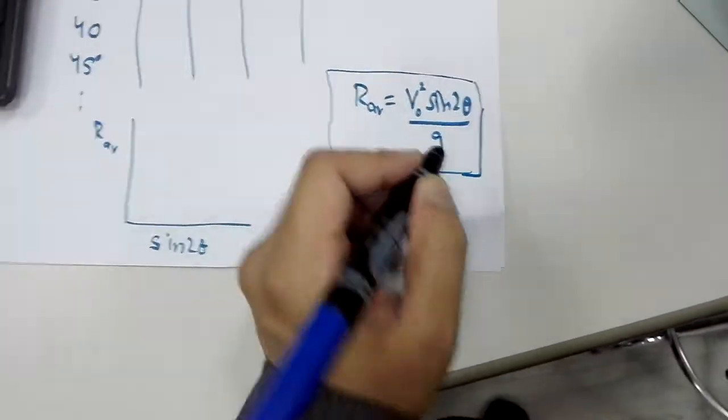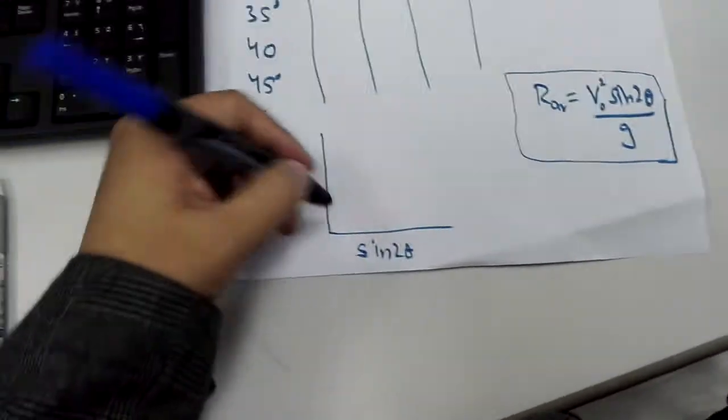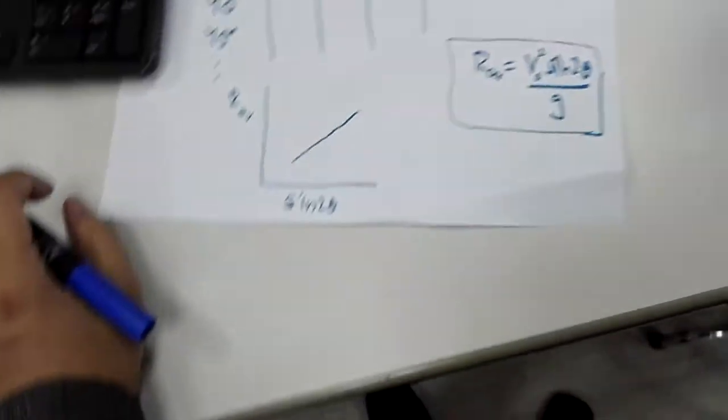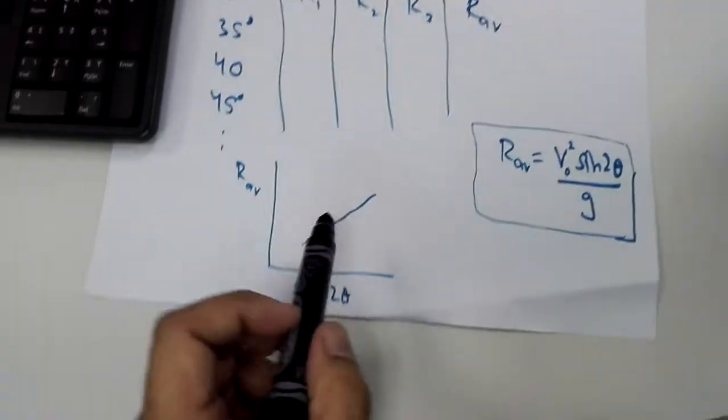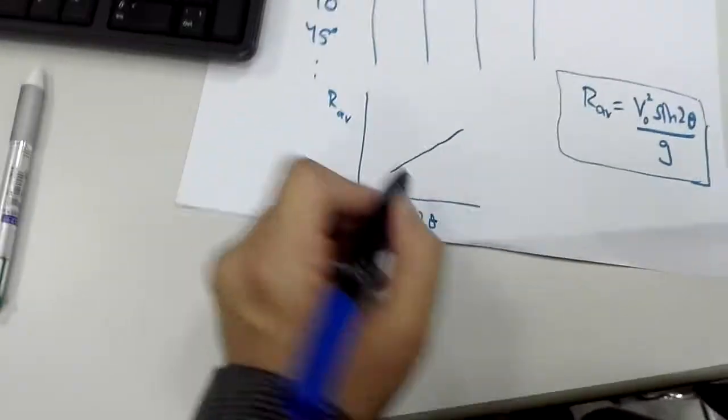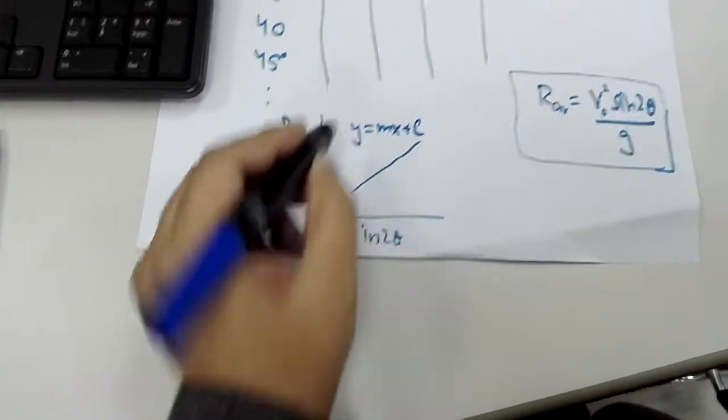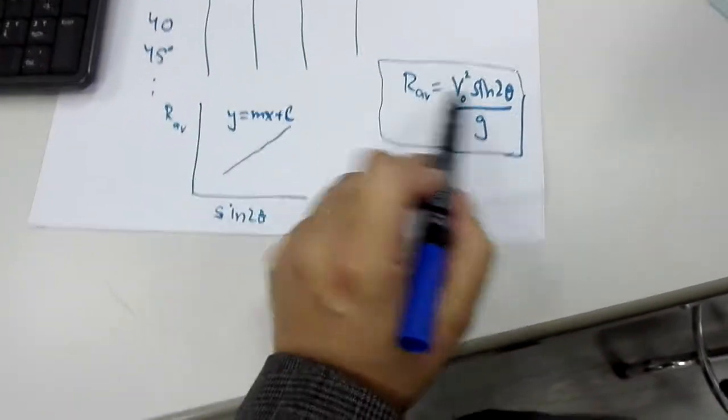So we get a line, and we can do a linear fit to the data in this case because the equation predicts a linear relationship. Excel will give you an equation like this. So what you do is if you plot r versus sine 2 theta,